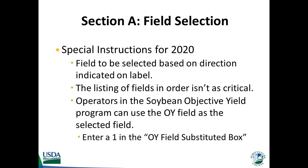This substitution is not required, but it is an option available to the enumerator during data collection for those operators that are in both the objective yield program and ARMS 2. All you will have to do is enter a 1 in the OY field substituted box on page 3 to indicate that the selected field for ARMS 2 is the same field as was selected for OY. Regardless, it will still be critical that we account for the total number of fields and the total acres planted to make sure that we can properly expand chemical use and fertilizer application for the entire operation.